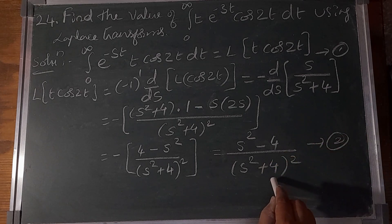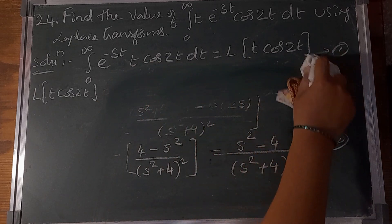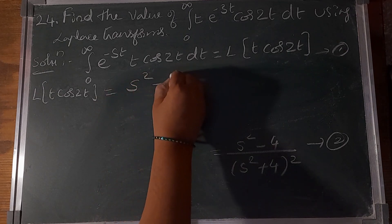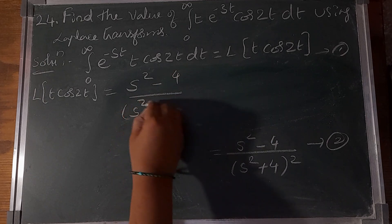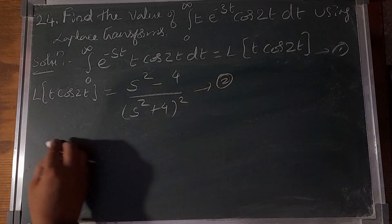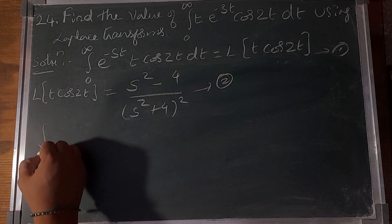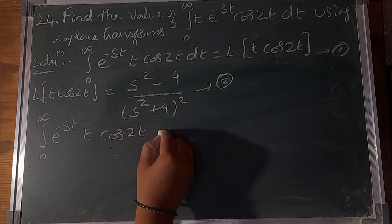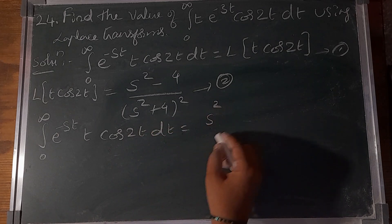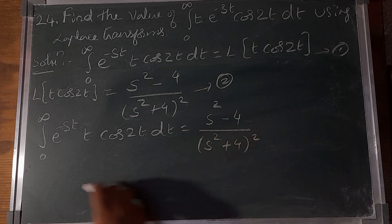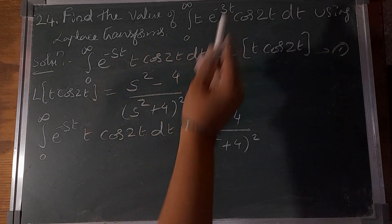This gives -(s² + 4 - 2s²)/(s² + 4)² = (s² - 4)/(s² + 4)². Call it equation number 2. Substituting equation 2 into equation 1: the integral of 0 to infinity e^(-st) t cos(2t) dt equals (s² - 4)/(s² + 4)².